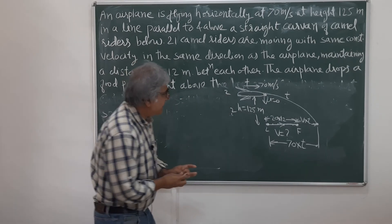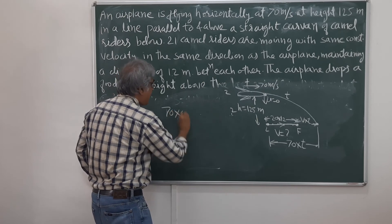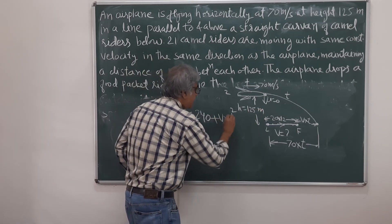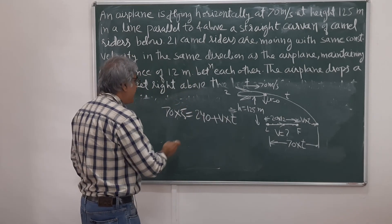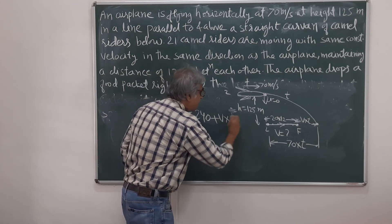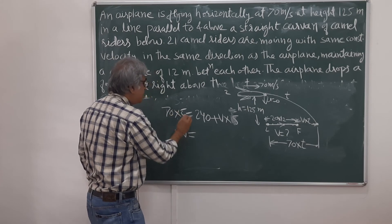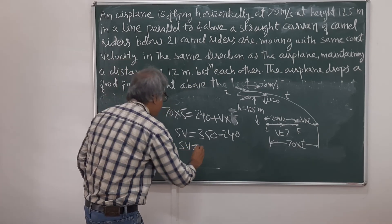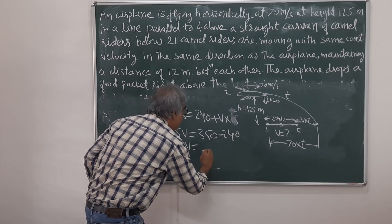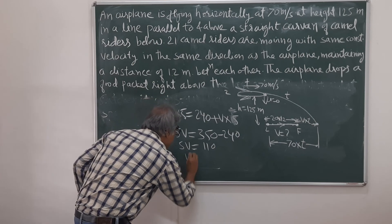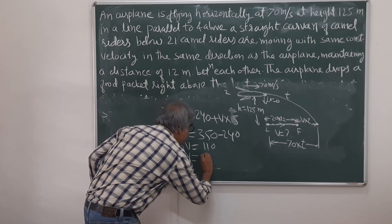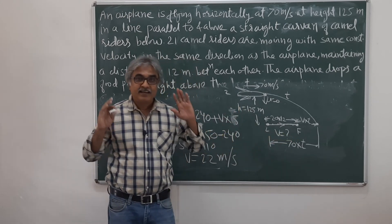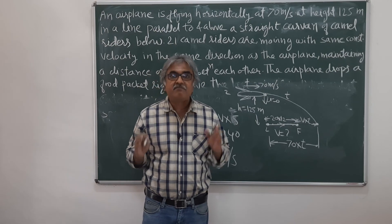Now with t = 5 seconds, we substitute into our equation: 70 × 5 = 240 + v × 5, so 350 = 240 + 5v, which gives 5v = 350 − 240 = 110, so v = 110 ÷ 5 = 22 meters per second. The caravan should be moving at a constant speed of 22 meters per second. Thank you.